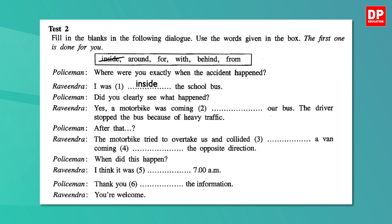Now look at the second test. Here you have to fill in the blanks of the dialogue with the words given in the box. Just like Test 1, here also the first one is done. Pause the video and do it. Don't keep any blanks empty. Even if you don't know the answer, just make a guess and write one. Let's discuss the answers now. Sometimes even though you find the correct answer, you misspell the words given in the list when you copy them in the blanks. So be careful to spell the words correctly when writing answers.